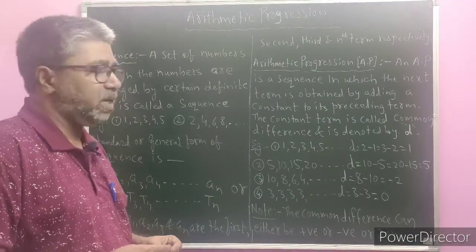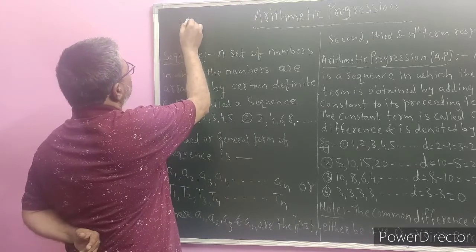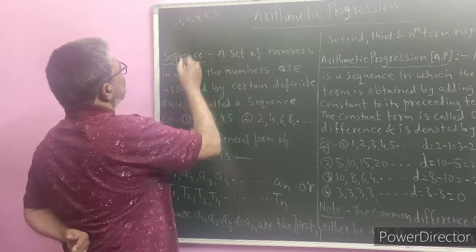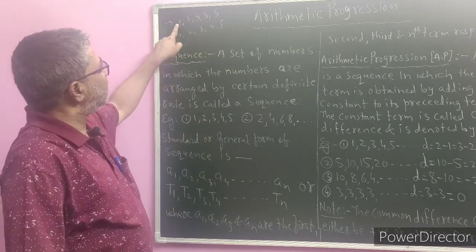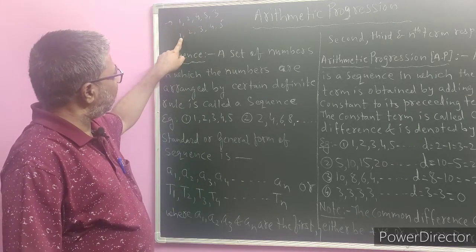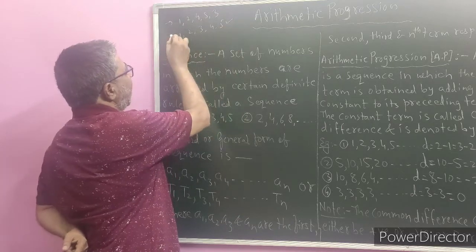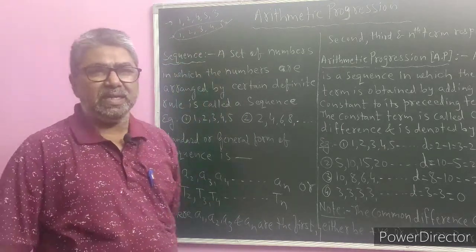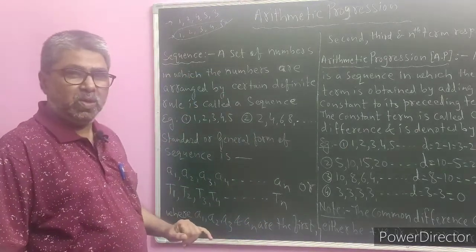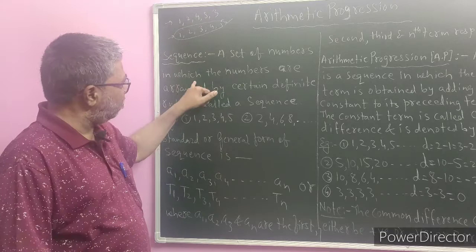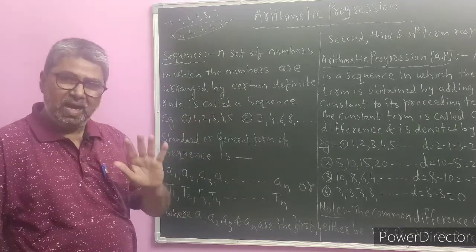Before understanding what arithmetic progression is, let us study about sequence. Let me write two sets of numbers. The first set of numbers is 1, 2, 4, 5, 3 and the second set of numbers is 1, 2, 3, 4, 5. You can easily understand that the second set of numbers is written by following a certain definite rule. Such a set of numbers is said to be a sequence. A set of numbers in which the numbers are arranged or written by following a certain definite rule is said to be a sequence.